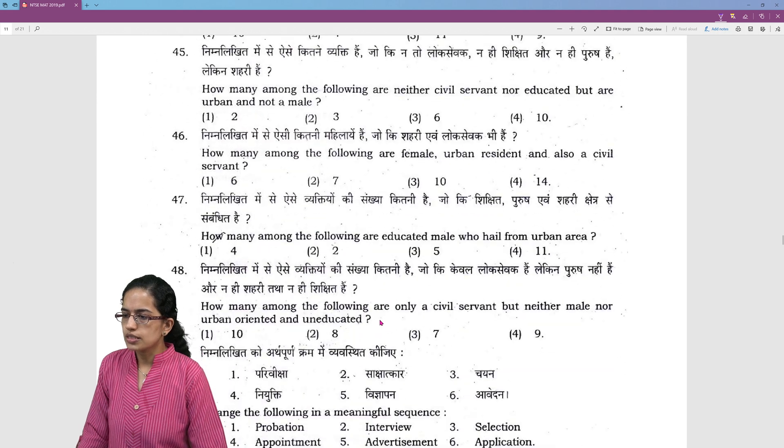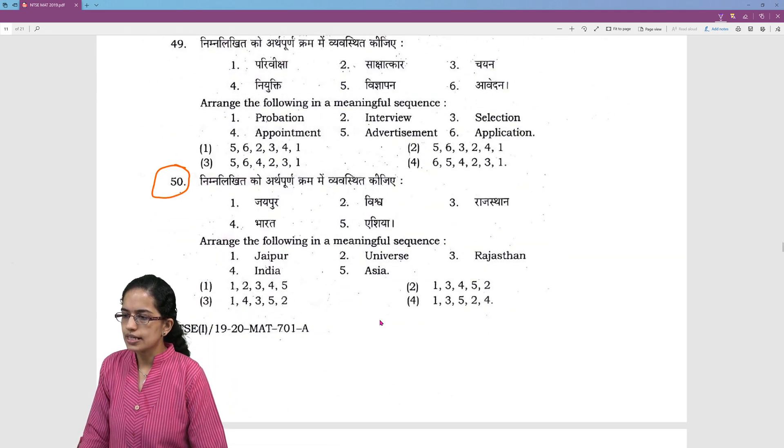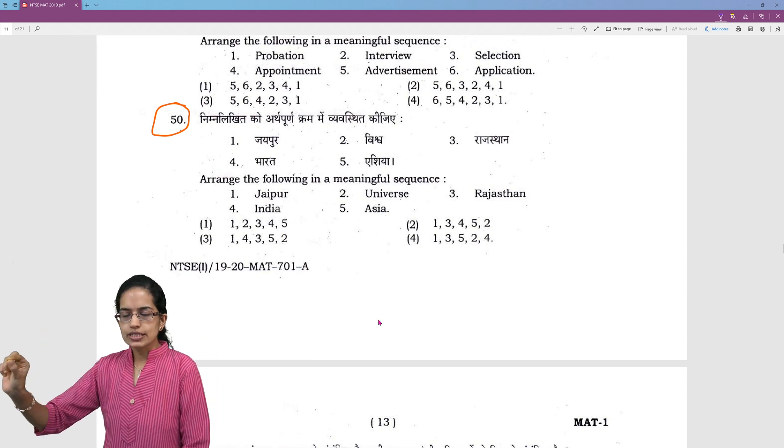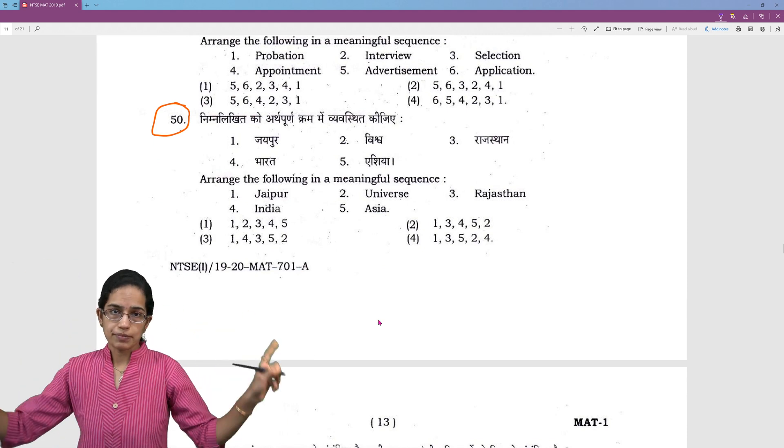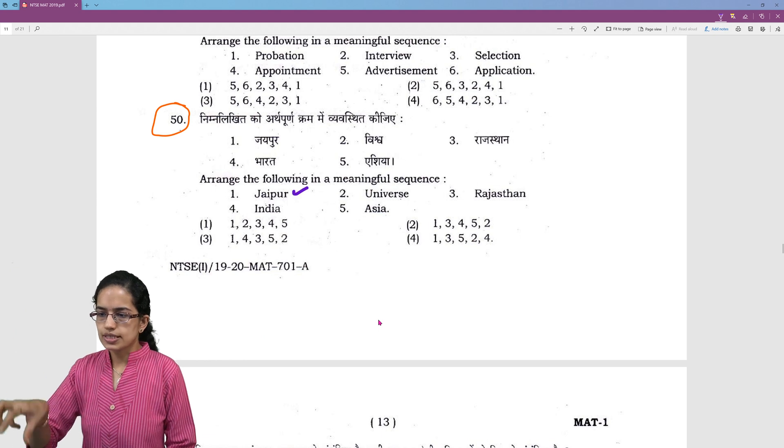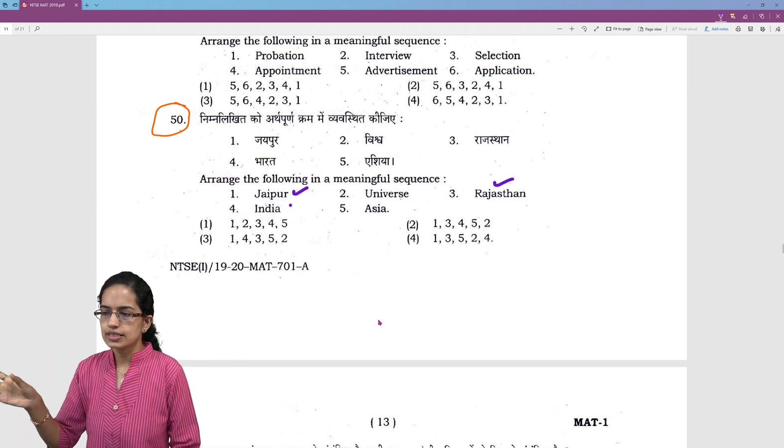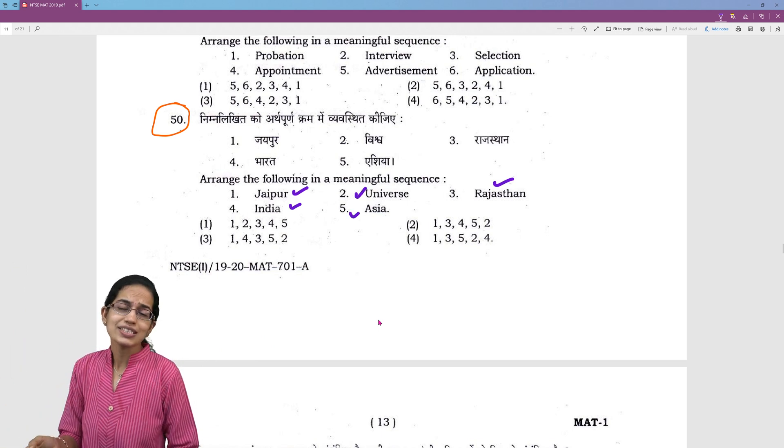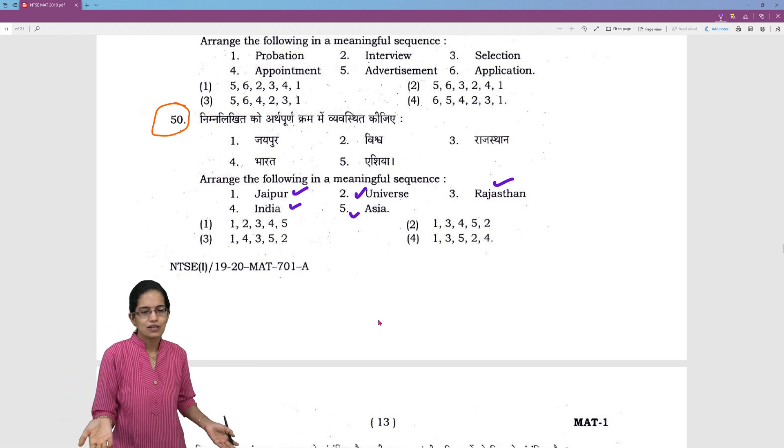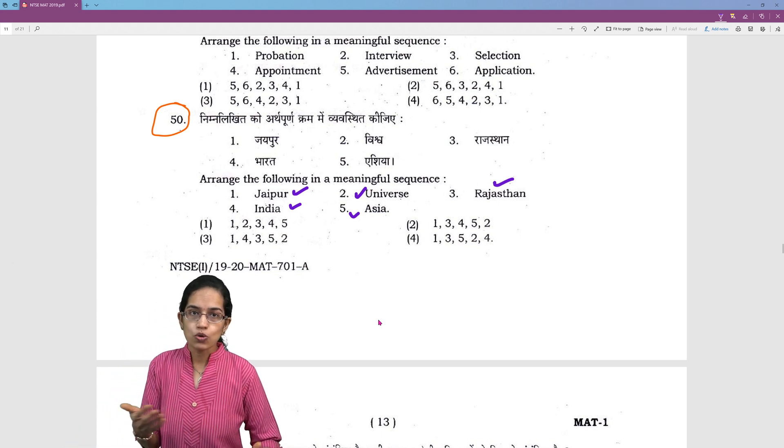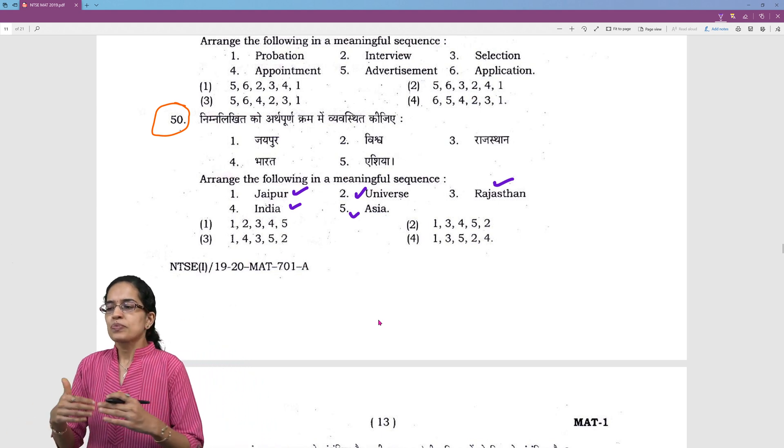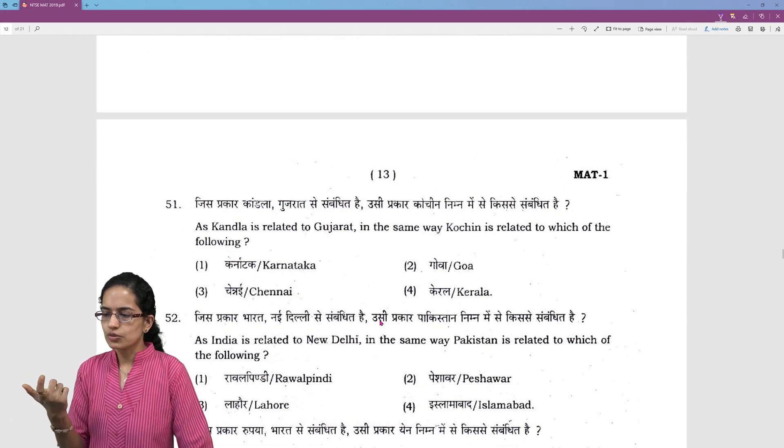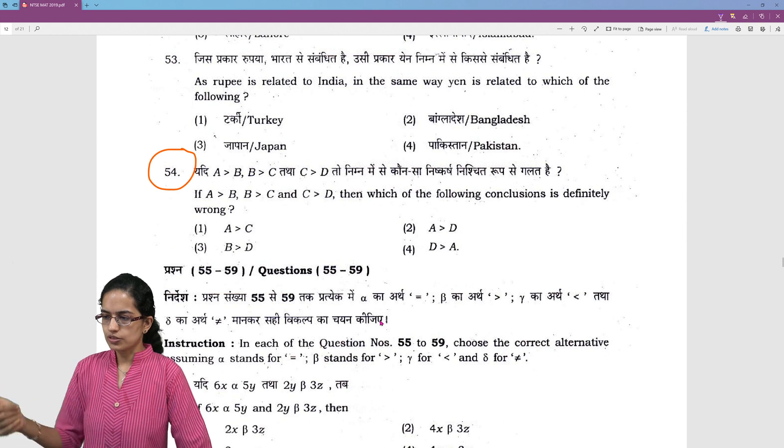The next question that we would try to understand is arrangement in a meaningful sequence. We will start from the smallest place to the bigger dimensions. Jaipur is a city which lies in Rajasthan. Rajasthan lies in India. India lies in Asia. Asia lies in universe. And I believe this is one of the interesting problems that you might be solving from your childhood. So, that is a very simple way of solving the questions like these. You have numerous questions which are based on this.